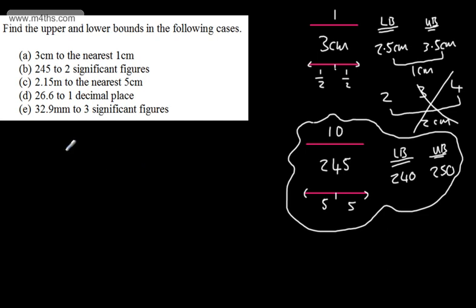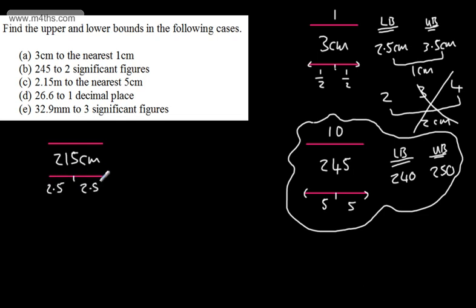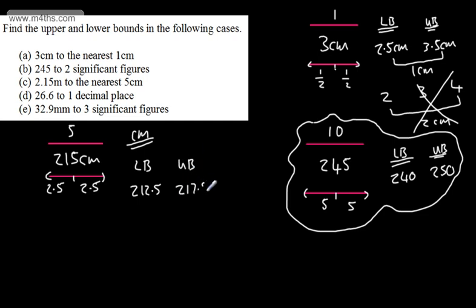Next: 2.15 metres to the nearest 5 centimetres. Converting to centimetres gives 215 cm to the nearest 5 cm. We're playing with 5 cm, split to 2.5 below and 2.5 above. In centimetres: lower bound is 212.5, upper bound is 217.5. Converting back to metres: lower bound is 2.125 m and upper bound is 2.175 m.